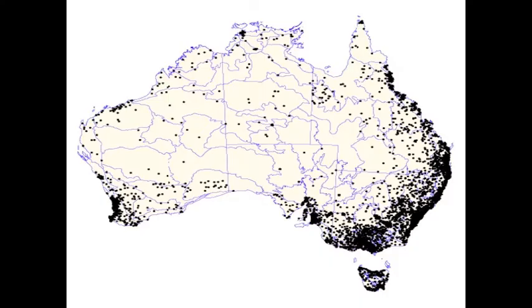The strengths of a dot distribution map: they're very accurate, much more accurate than choropleth maps, and you can do a better job of pinpointing exact locations. The weakness of a dot distribution map is that they're really difficult to make. This is not the type of thematic map you're going to draw freehand — you would definitely want to have some mapping software if you're going to create one of these maps.